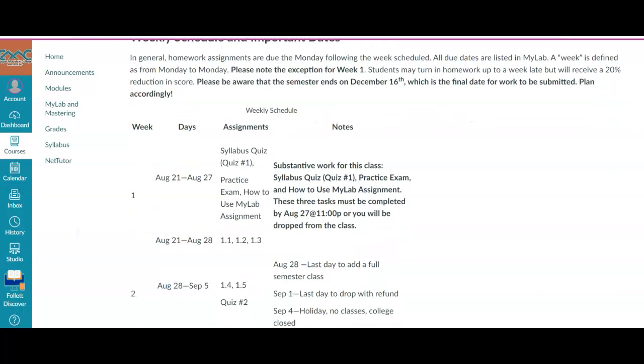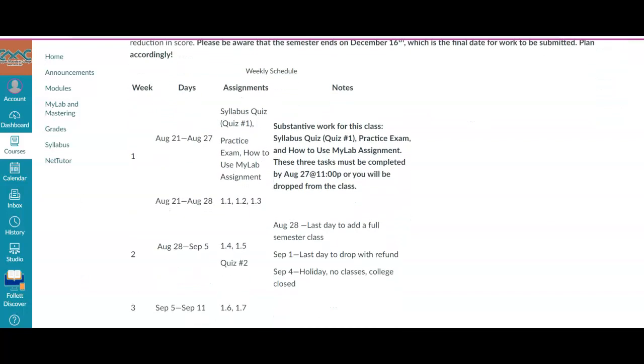The big thing you're going to want to look at is the weekly schedule. So you can see here week one, we have to have substantive work for the first week of class, so I don't have control over those due dates. Our substantive work is going to be the syllabus quiz, which is 10 questions. It's pretty easy and you can use the syllabus to take the quiz. We also have a practice exam, which is five questions, and it's pretty easy too. It's just a practice, how we're going to submit our exams, so we can get that kind of down how we're going to do it. And then there's a how to use MyLab assignment.